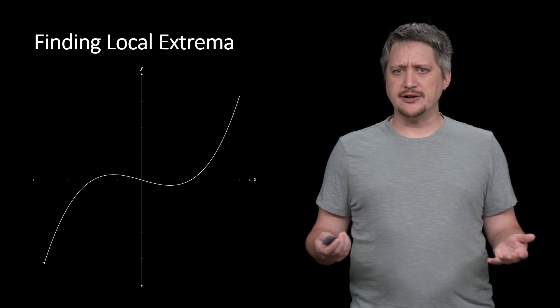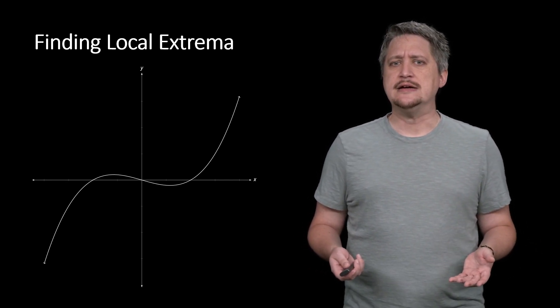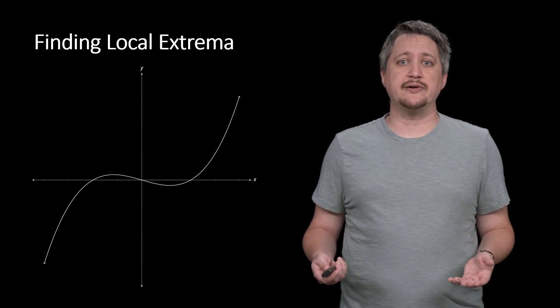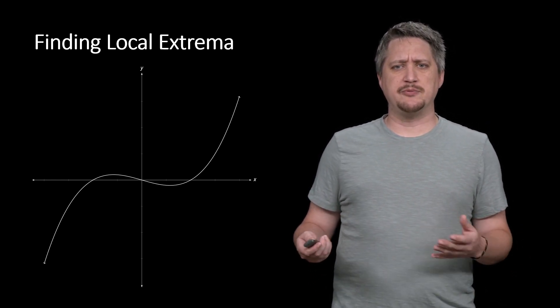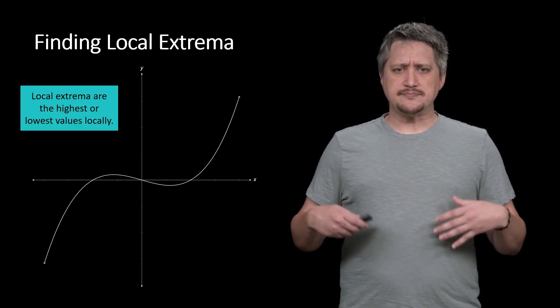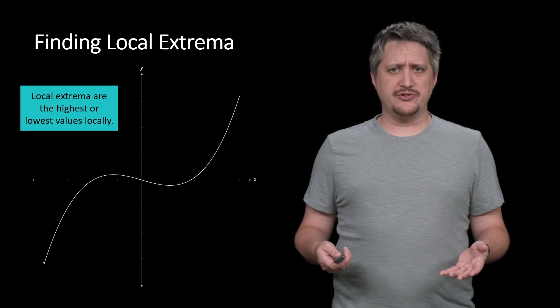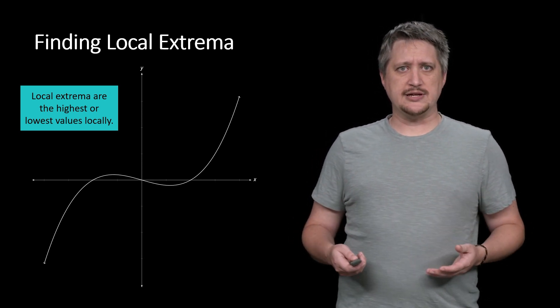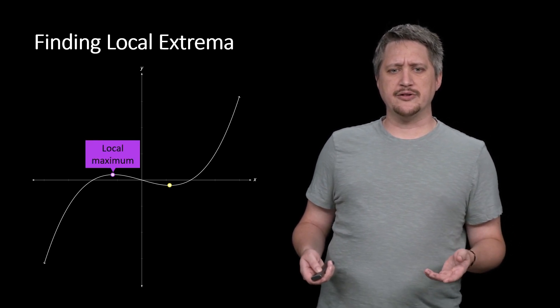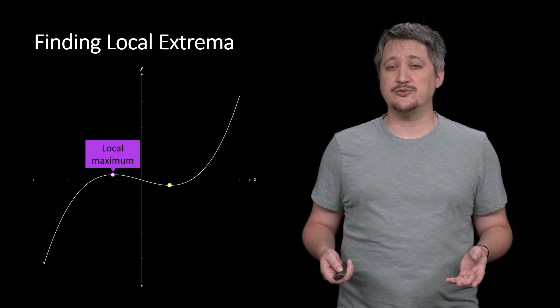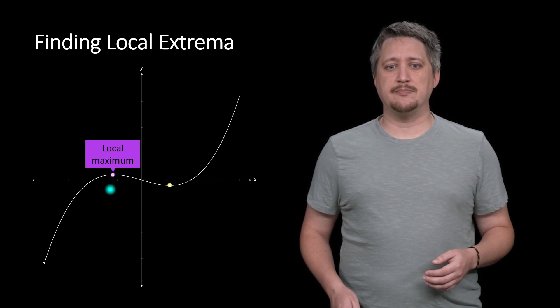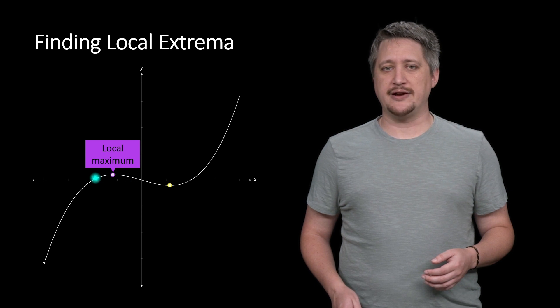So as a quick reminder, finding local extrema. Local extrema are called local because they apply in a local area. So when we're talking about maximums and minimums, we don't necessarily mean the maximum minimum overall. Rather, we want the highest or lowest values locally. For example, if we look at these two little dots here, this one on the left is a local maximum because in a small range around it, it's the biggest part in that small little area.